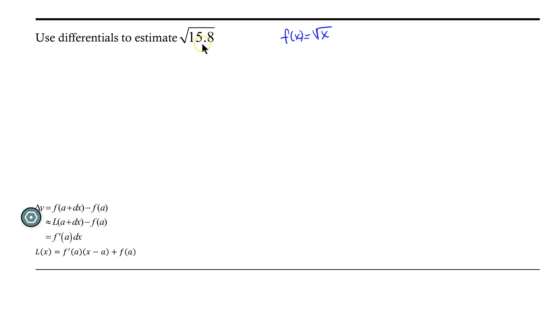Next, I notice that I'm taking the square root of 15.8. Well, I need to choose a value, a, that is easily evaluated in my original function, my square root function. And that value, a, needs to be close to the number that I'm working with. So I want to choose a number that's close to 15.8, but is easily evaluated in the square root function.